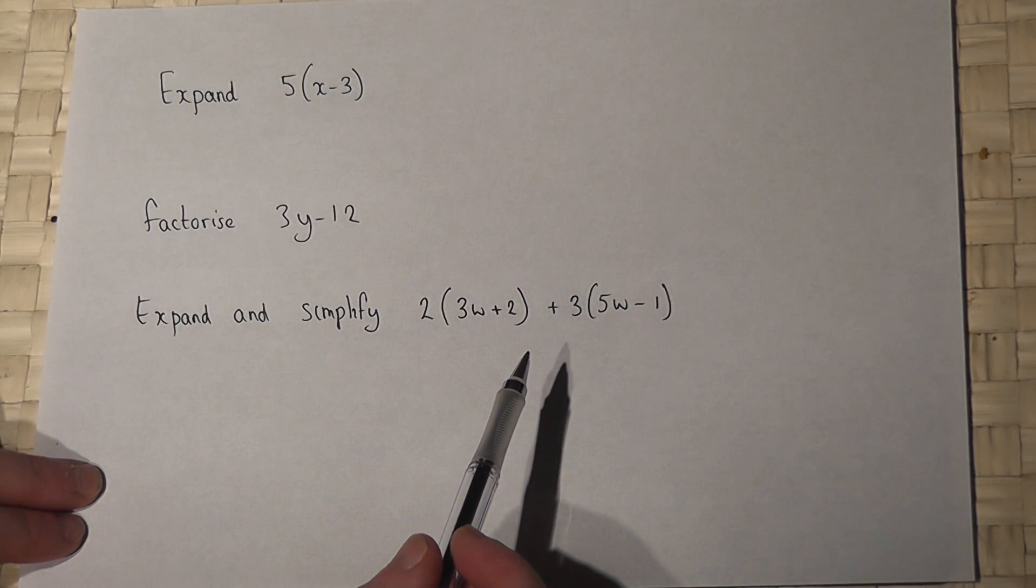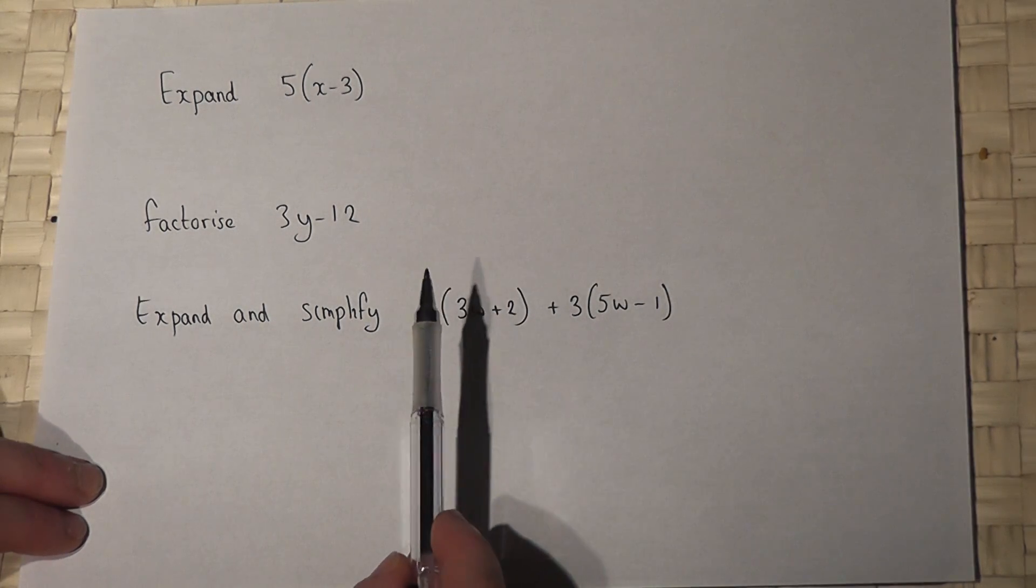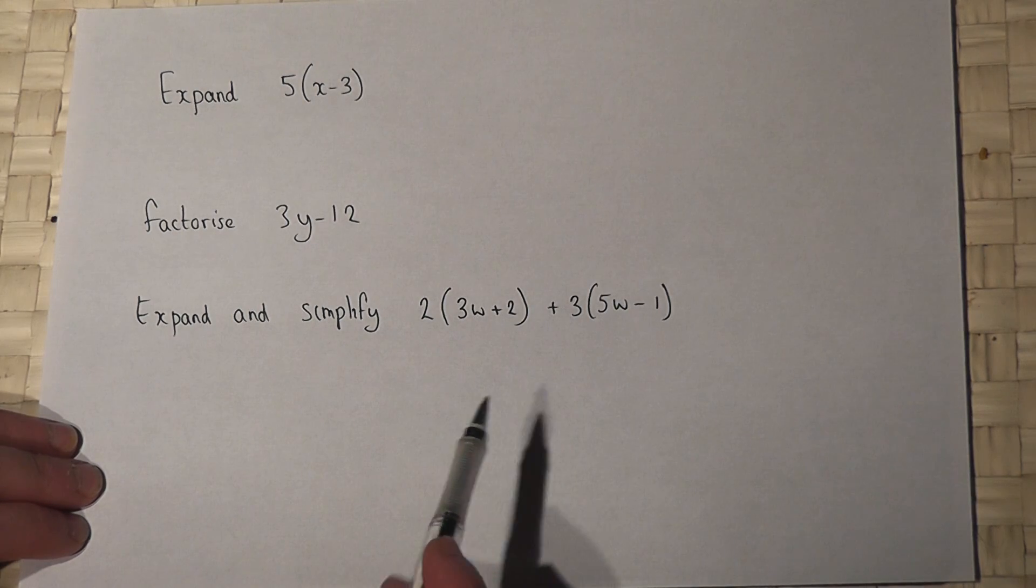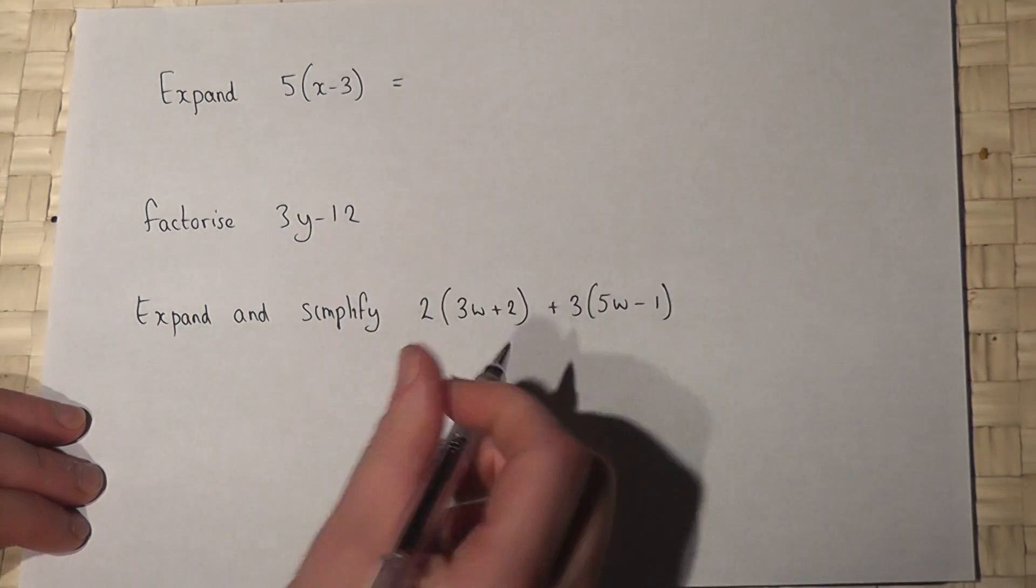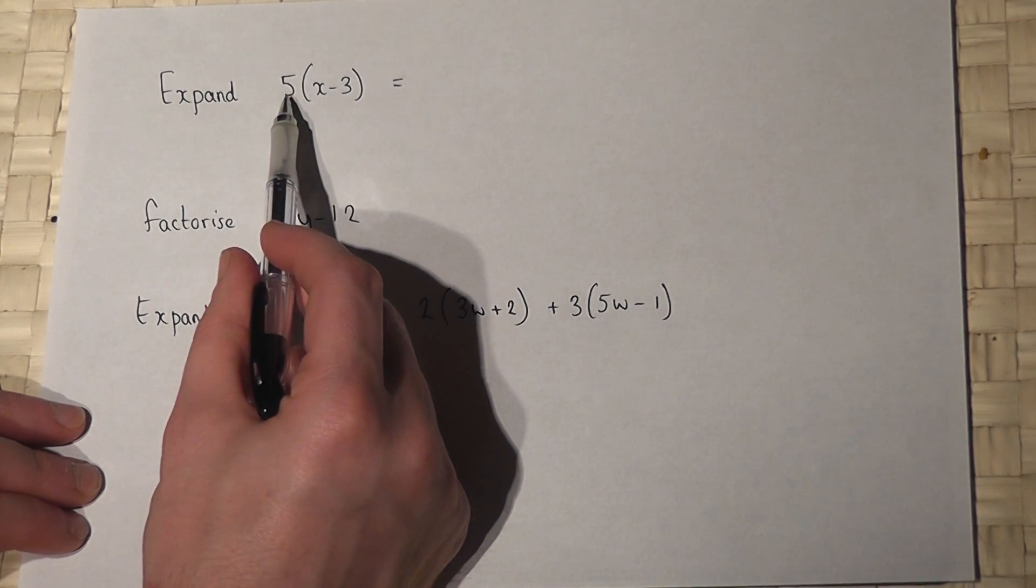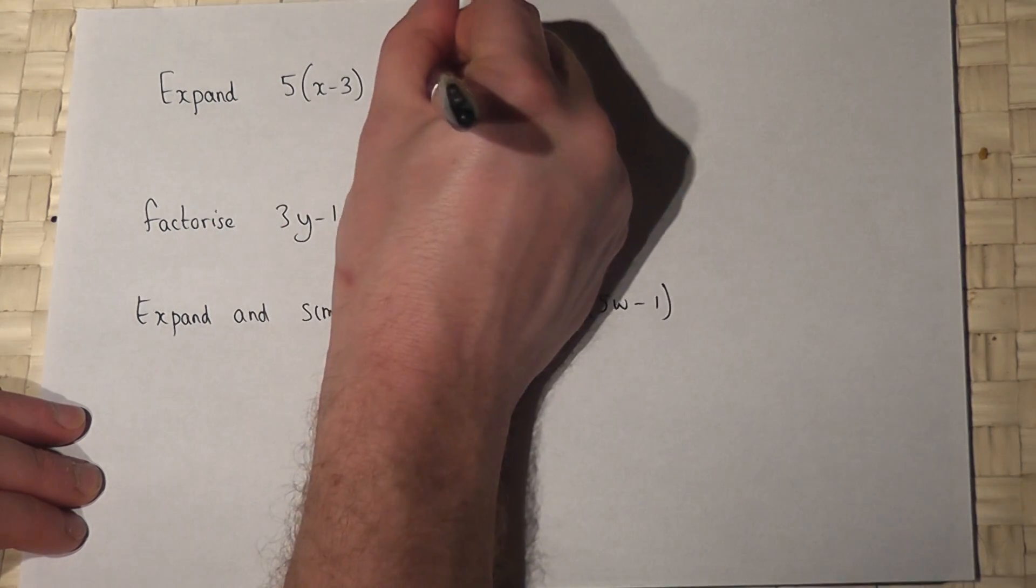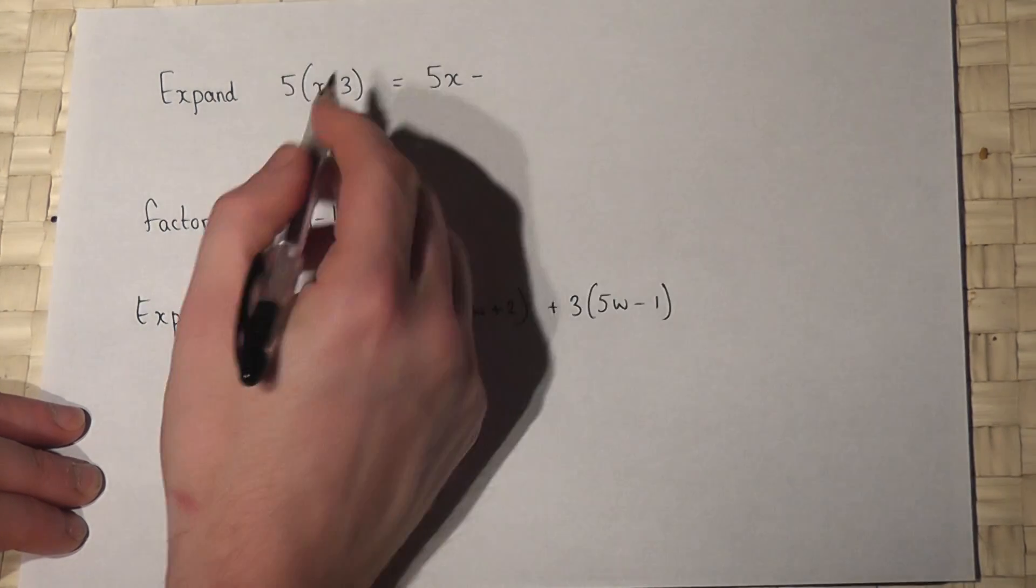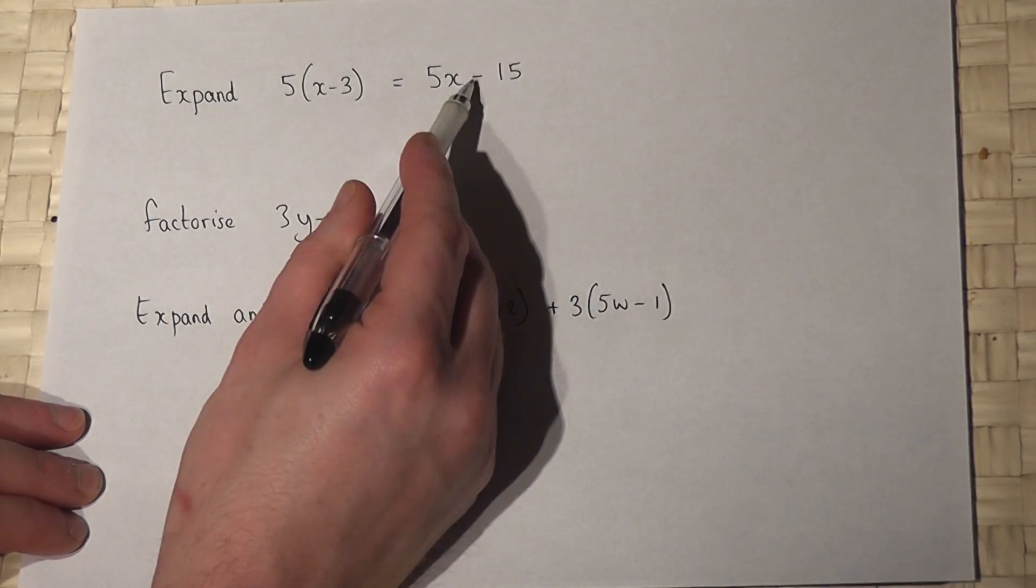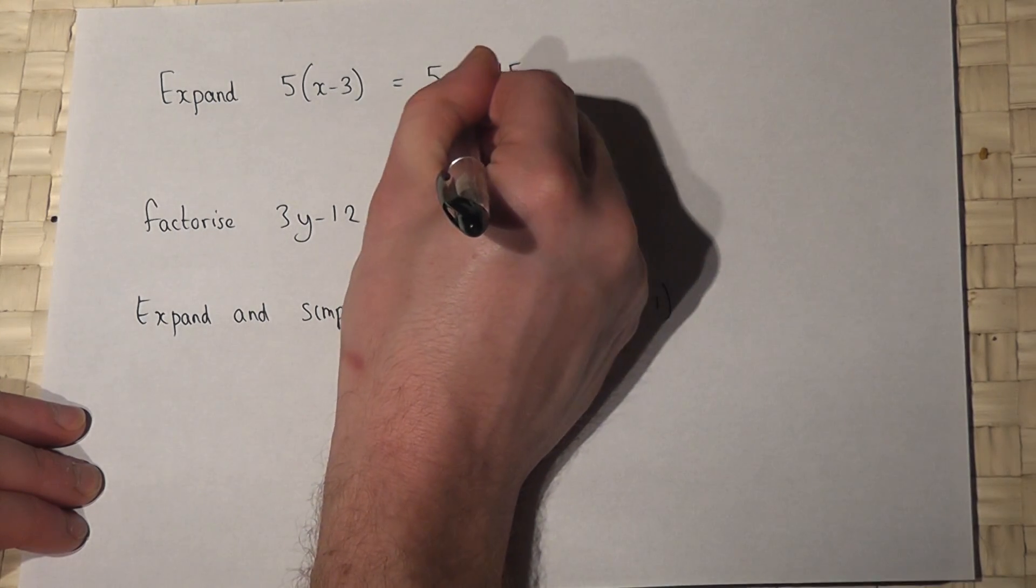This video reviews three basic examples involving brackets. Part one is to expand. To expand, we times both things in the bracket, in this case by 5. So 5 times x is 5x, and 5 times 3 is 15. It's kept negative, so the answer is 5x - 15.